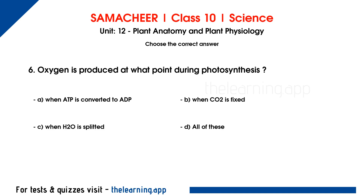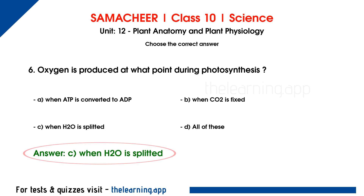Sixth question: Oxygen is produced at what point during photosynthesis? Options are A, when ATP is converted to ADP; B, when carbon dioxide is fixed; C, when H2O is splitted; D, all of these. The correct answer is C, when H2O is splitted.